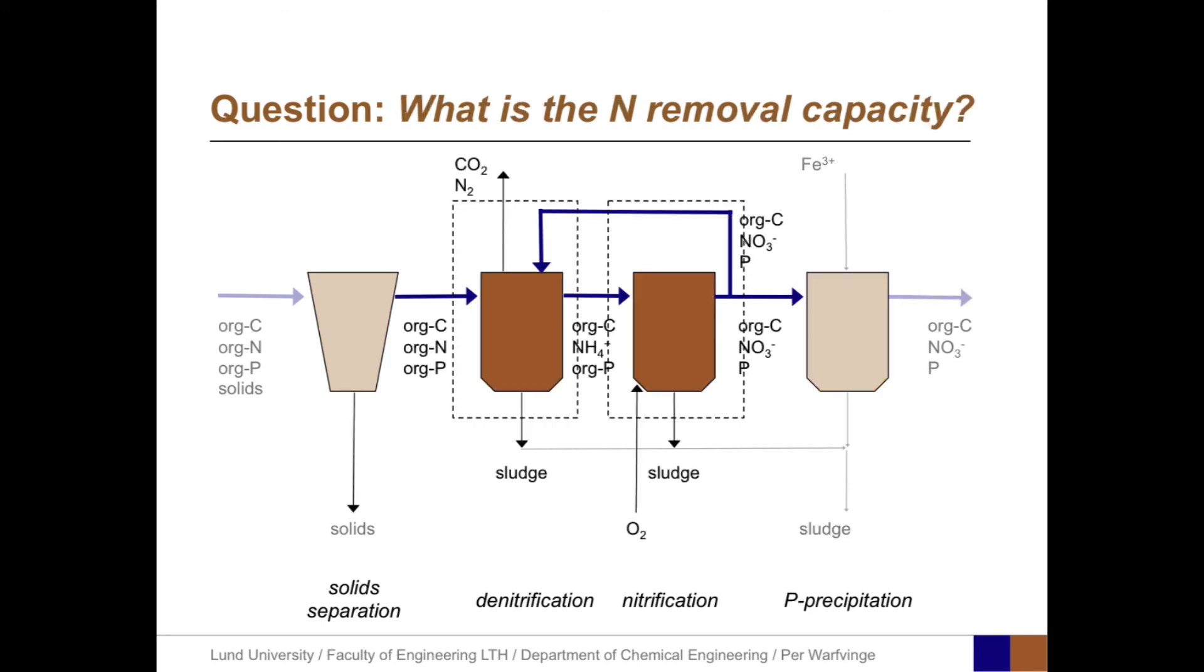For the N removal capacity question, things become more complicated because there is interconnectivity between the two physical units where nitrogen reactions take place. The minimum appropriate system level to understand this is to see these two entities as two separate systems that are interconnected. We clarify they are separate systems by drawing system boundaries around each subprocess.